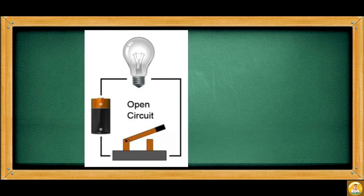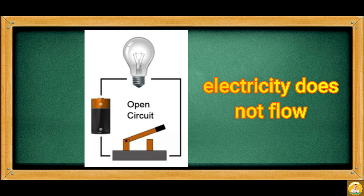Here's a picture of an open circuit. As you can see, there is a gap in the complete path from one end of the circuit to the other end. For this reason, electricity does not flow.